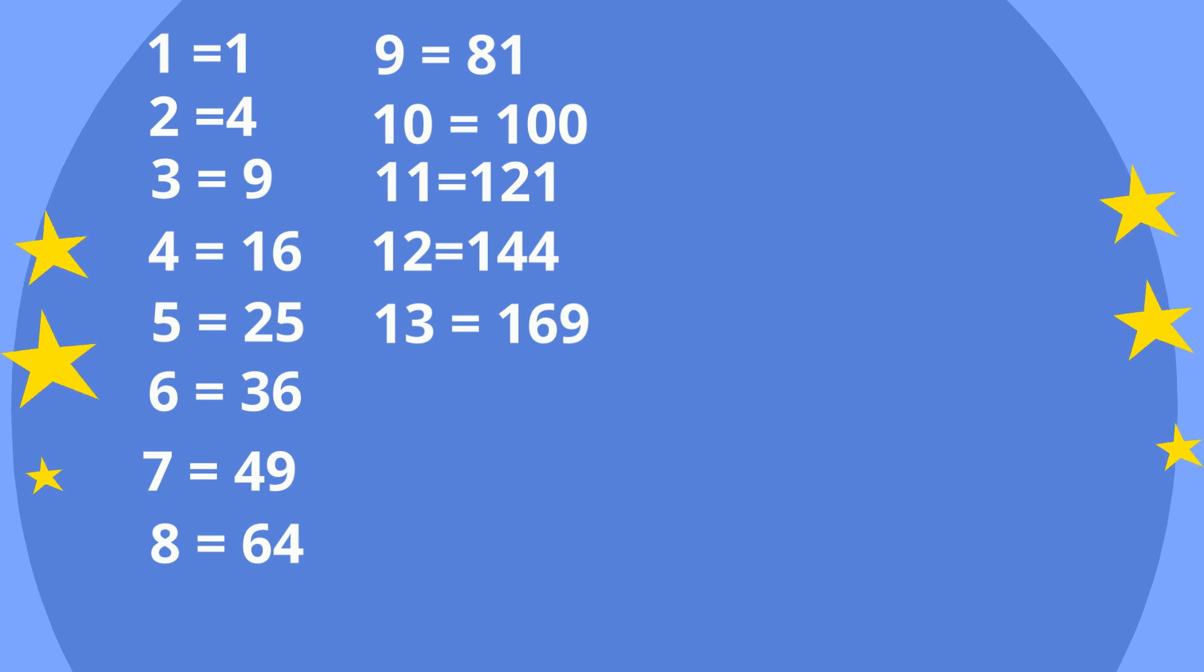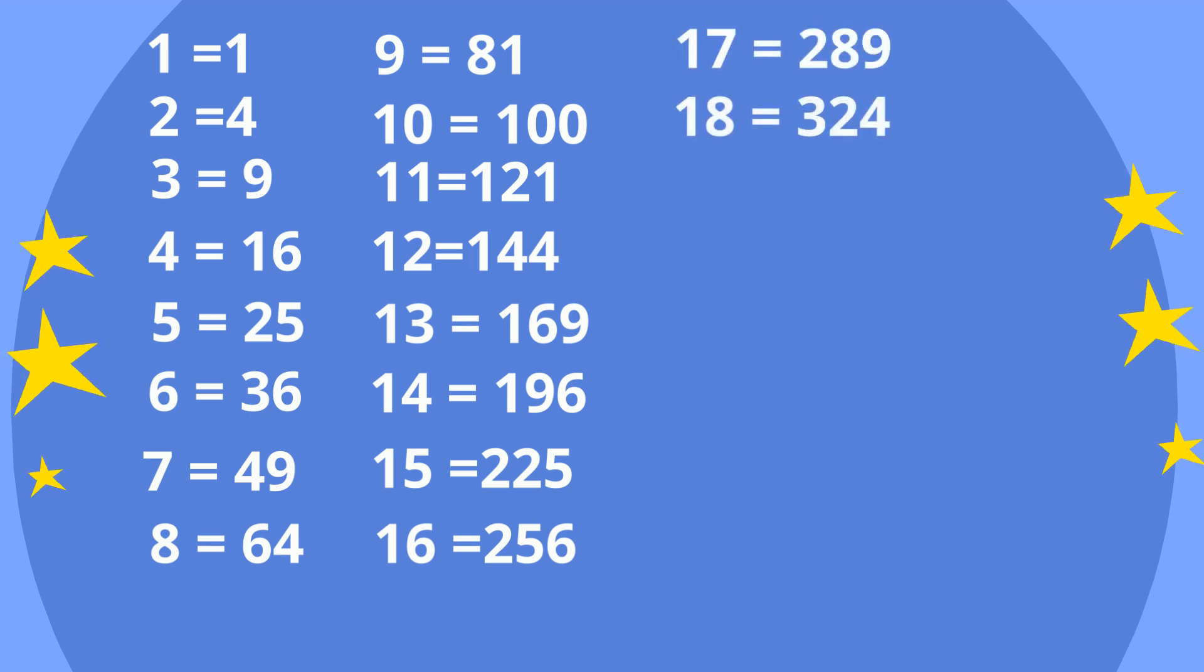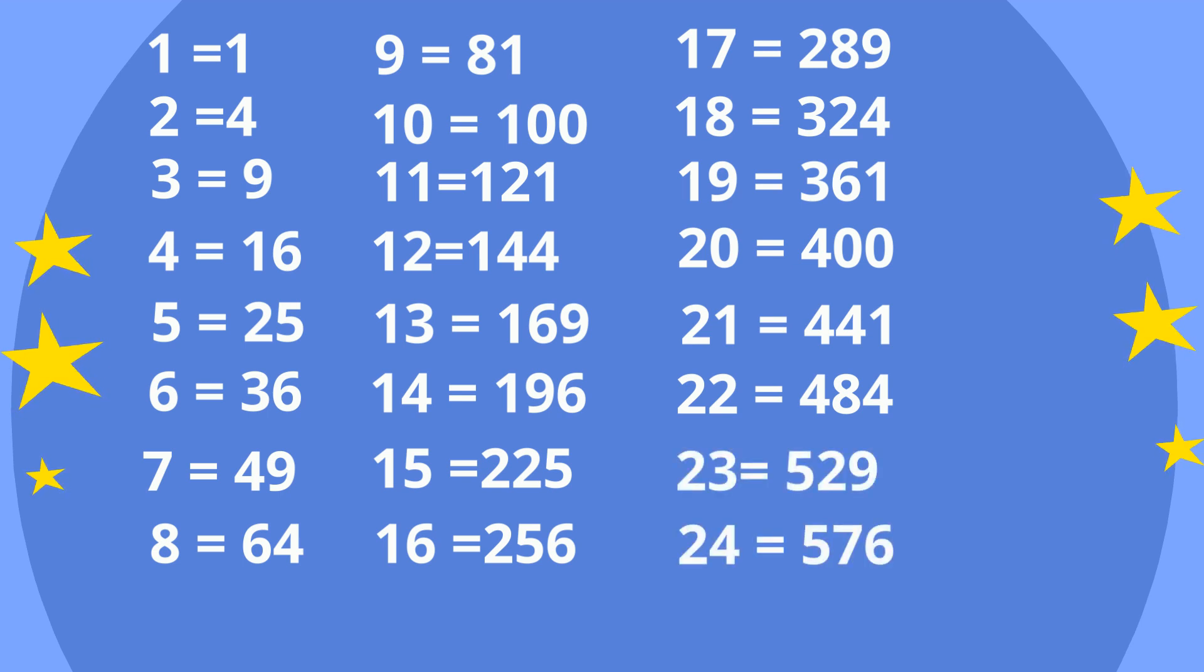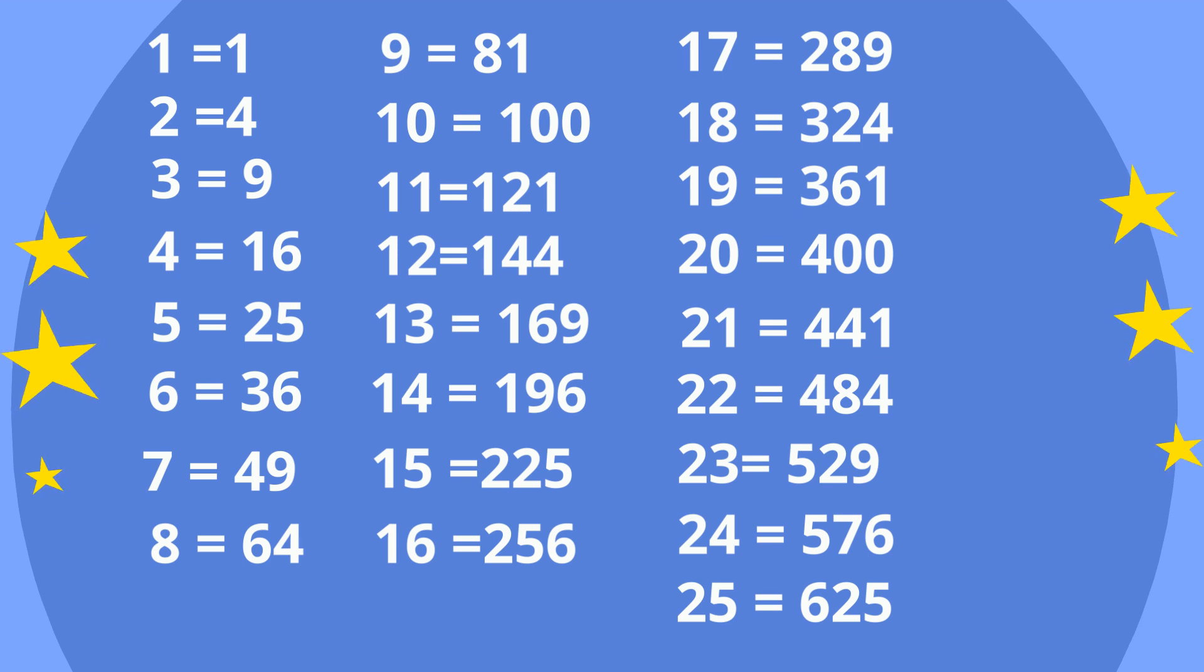14 is 196, 15 is 225, 16 is 256, 17 is 289, 18 is 324, 19 is 361, 20 is 400, 21 is 441, 22 is 484, 23 is 529, 24 is 576, 25 is 625.